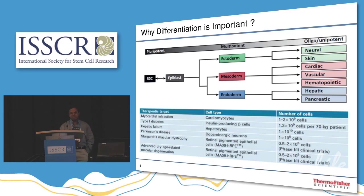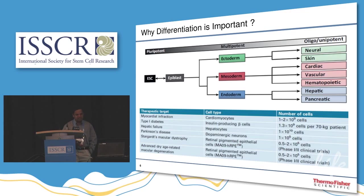So why is differentiation important? The whole human body originates from three germ layers — ectoderm, mesoderm, and endoderm. Human ESC or iPSC have to be taken through those germ layer differentiations to ultimately give rise to different cell types: on the ectoderm towards neuron and skin, mesoderm towards cardiac, blood, and vascular cells, and endoderm towards pancreatic, hepatic, and intestinal cells.